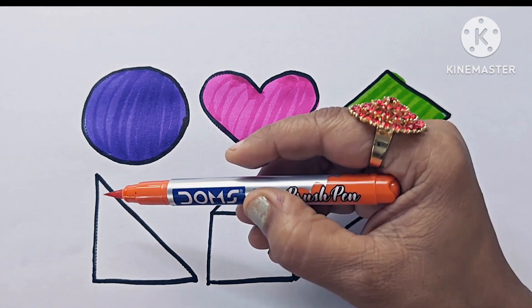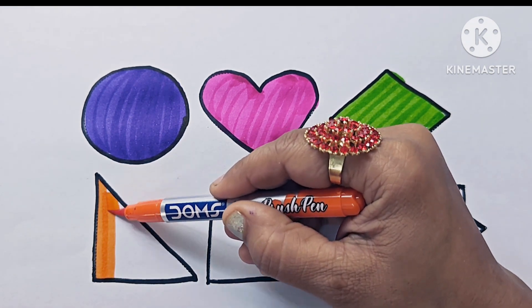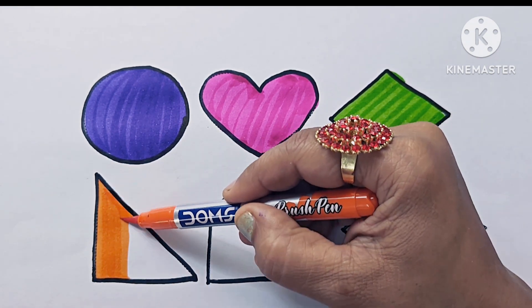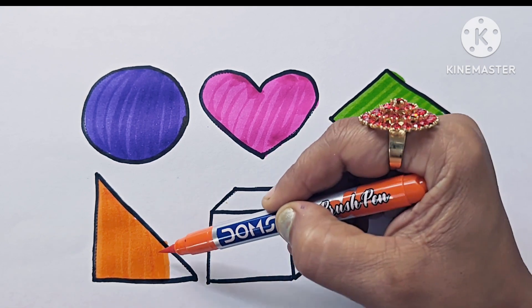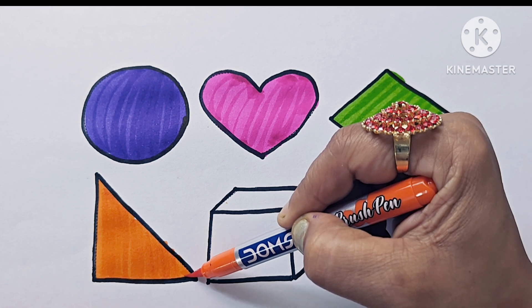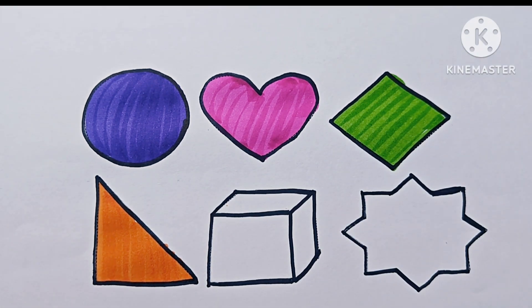Orange color. This is right angle triangle. It has 3 sides, 3 vertices, 3 corners or 3 angles, in which one angle is 90 degrees. It is a 2D shape.